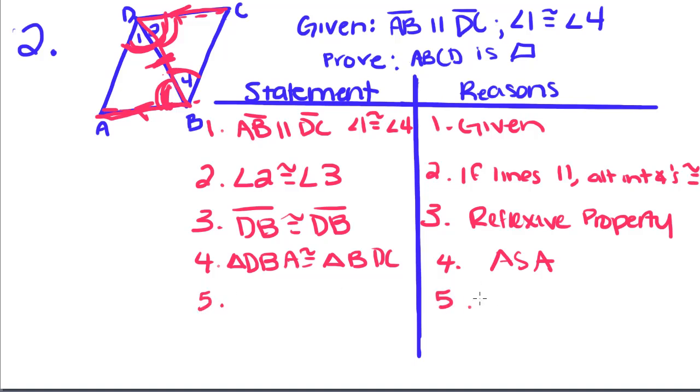Then we can get DC congruent to AB. DC is congruent to AB because if triangles are congruent, corresponding parts are also congruent.